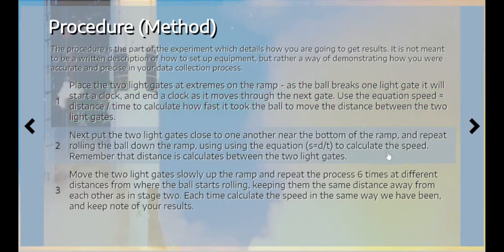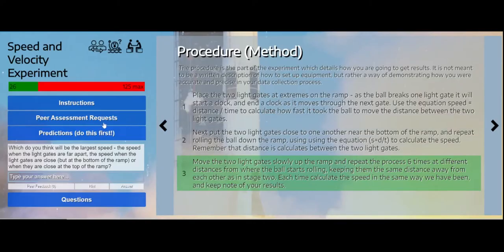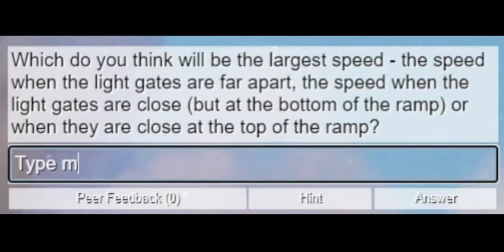Sometimes if I click right here, there will be a risk assessment. But in this case, there isn't. Okay, now I've set this all up and I know what I'm doing for this experiment. I can type my prediction here.